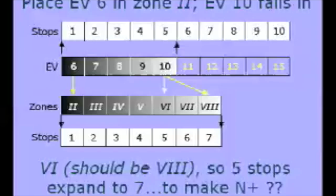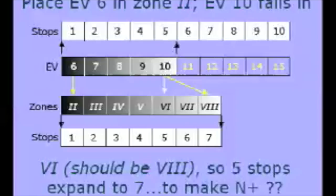If the subject range in stops is less than normal, greater than normal development is necessary to expand it. In this example, a five-stop range is expanded to match the normal seven, and the extended development necessary to accomplish this might be called N-plus-2.